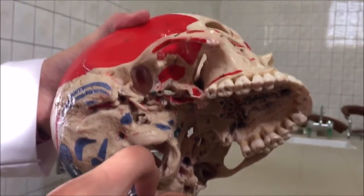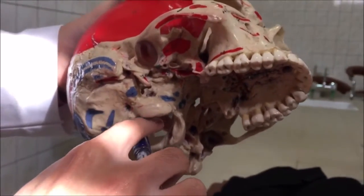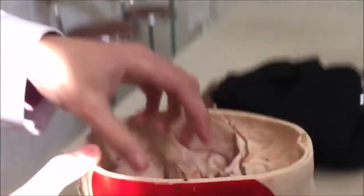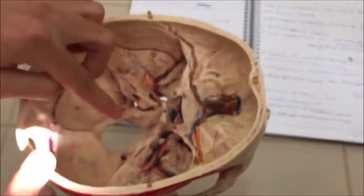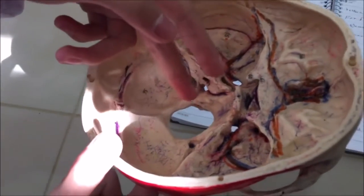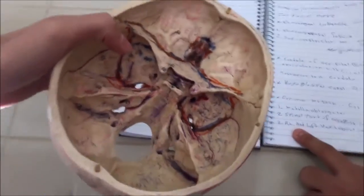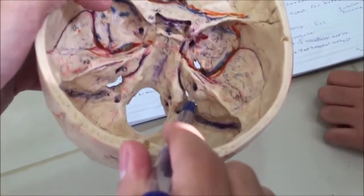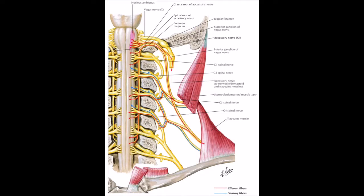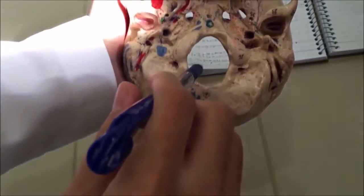The foramen magnum is for passage of the medulla oblongata and the spinal part of the accessory nerve. The spinal fibers of the accessory nerve travel upward from the spinal cord, pass through the foramen magnum, and fuse with the cranial fibers of the accessory nerve to form cranial nerve 11, which then passes through the jugular foramen. The foramen magnum also provides passage for the right and left vertebral arteries.